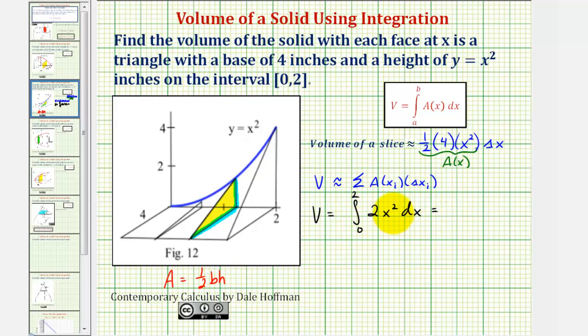So the antiderivative would be two times x to the third divided by three, or two-thirds x to the third. We'd evaluate this at the upper and lower limits of integration. So we'd have two-thirds times two cubed minus two-thirds times zero cubed.